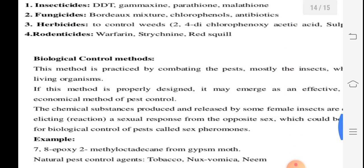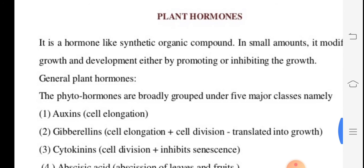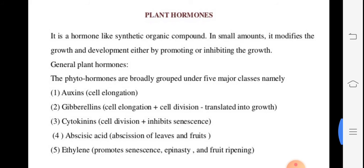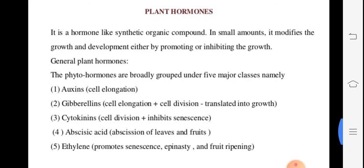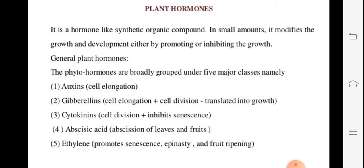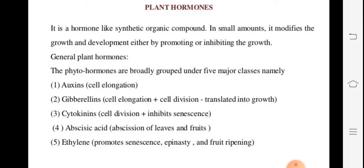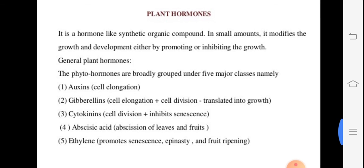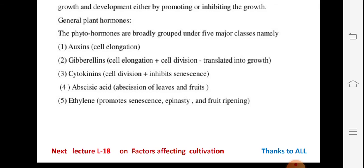Plant hormones are also a factor affecting cultivation under changing climate conditions. Phytohormones include auxins for cell elongation related to sunlight, gibberellins for cell elongation and cell division, cytokinins for cell division. Inhibitors include abscisic acid, which controls abscission of leaves and plant metabolism. Ethylene promotes senescence, epinasty, and fruit ripening — unripe fruits harvested from the field can be matured by keeping them in ethylene vapors.